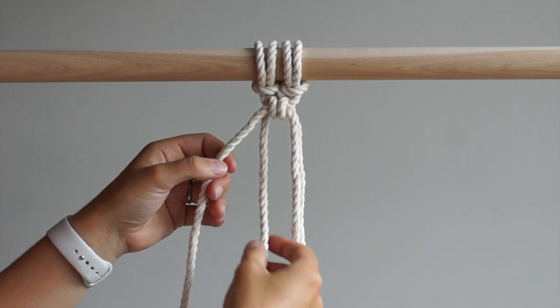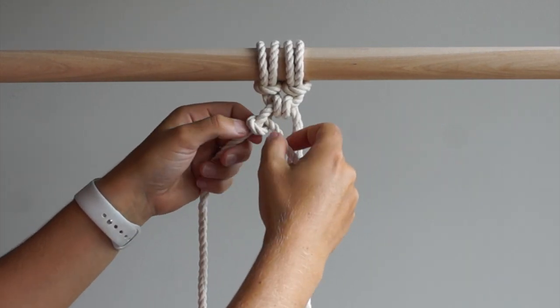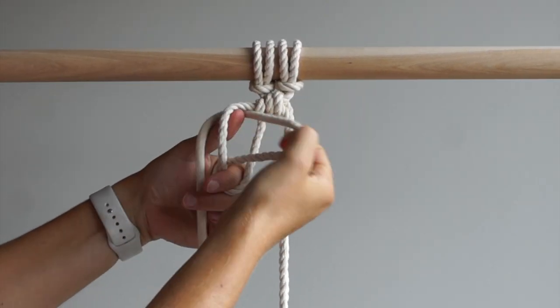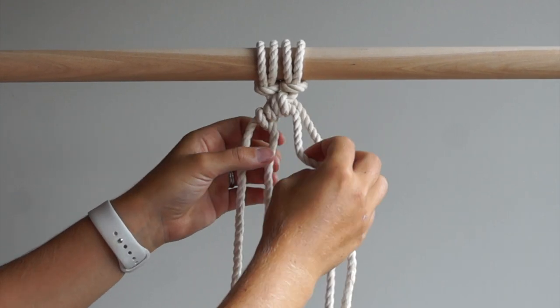Using the back left cord as your working cord, tie a diagonal double half hitch knot moving to the left. Repeat on the right side of your work.